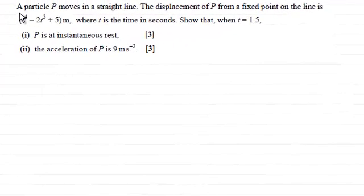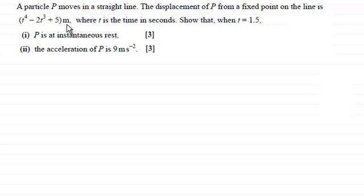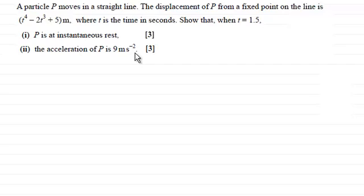In this question we're told that a particle p moves in a straight line and the displacement of p from a fixed point on the line is t to the power 4 minus 2t cubed plus 5 meters, where t is the time in seconds. Show that when t equals 1.5, in part one p is at instantaneous rest, and in part two the acceleration of p is 9 meters per second per second.